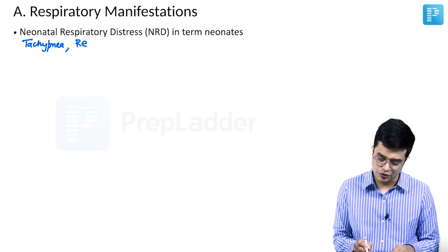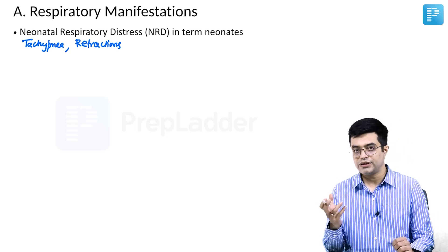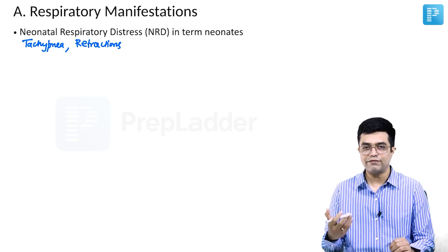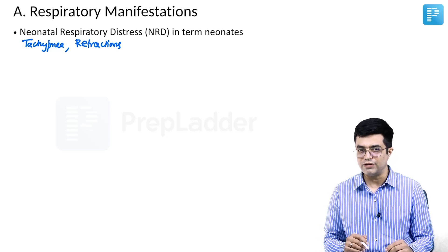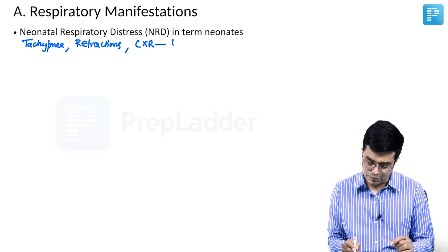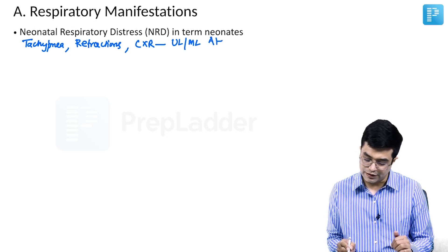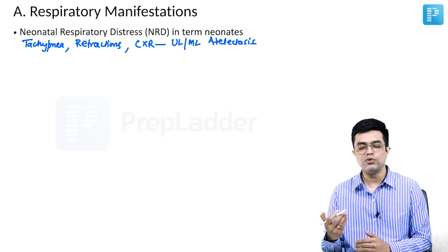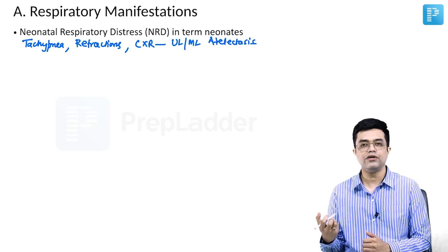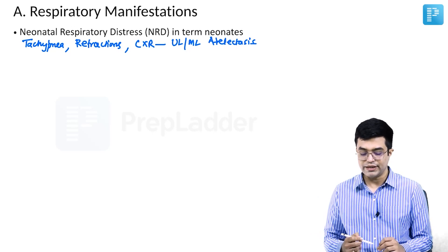There will be retractions, use of accessory muscles of respiration, and some response to oxygen. But in TTN, chest X-ray shows fluid in the interlobar fissure or haziness of the lung fields. In these patients, chest X-ray will show upper lobe or middle lobe atelectases, either unilateral or bilateral. That type of respiratory distress, which is very slowly resolving and requires oxygen or CPAP support, is a common manifestation.